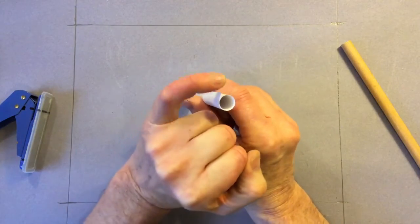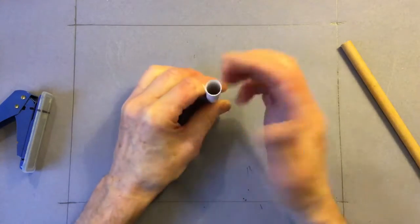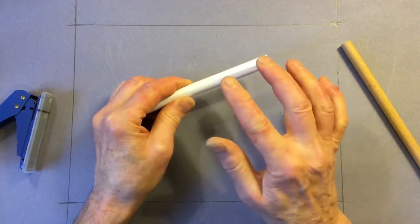If you've made a really good tube you should be able to stand it up. Now it doesn't matter about this little bit of the edge sticking out. That doesn't matter after you've put that bit of tape on.